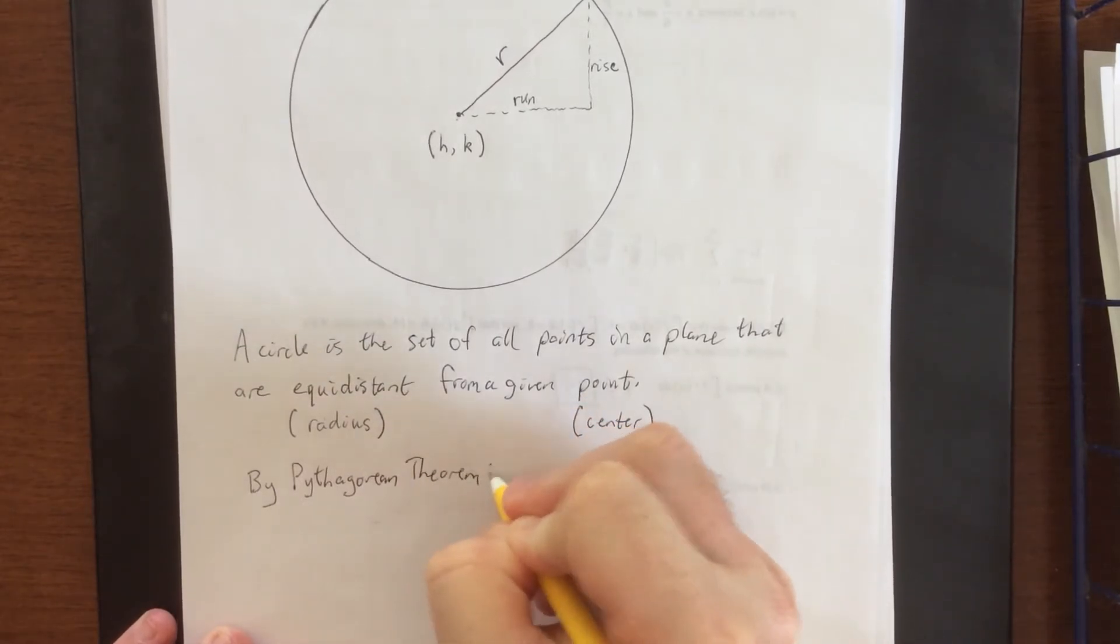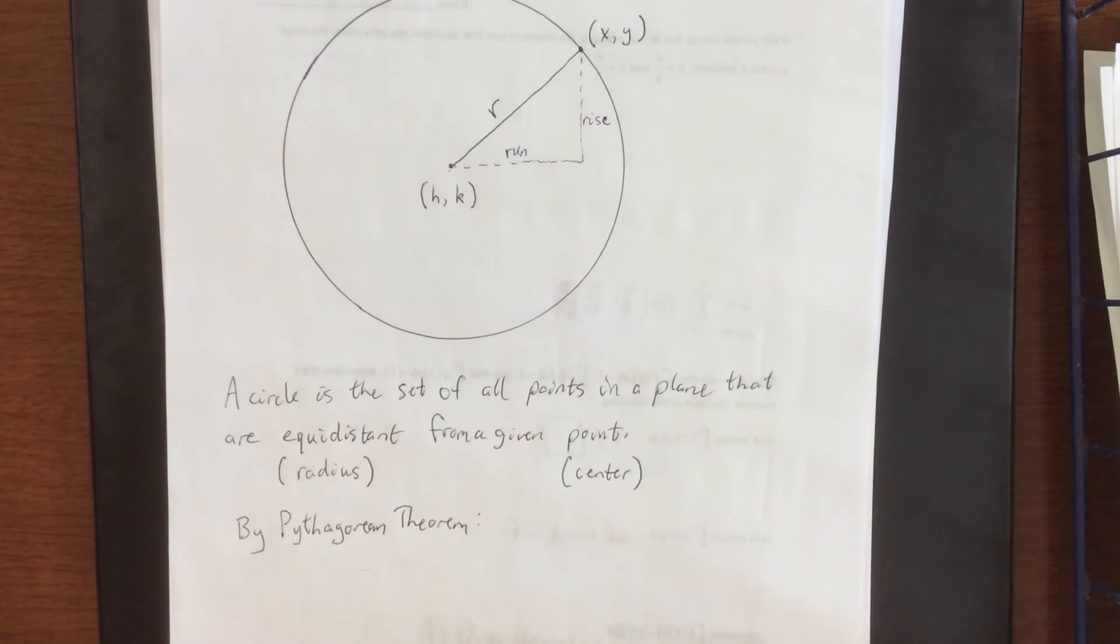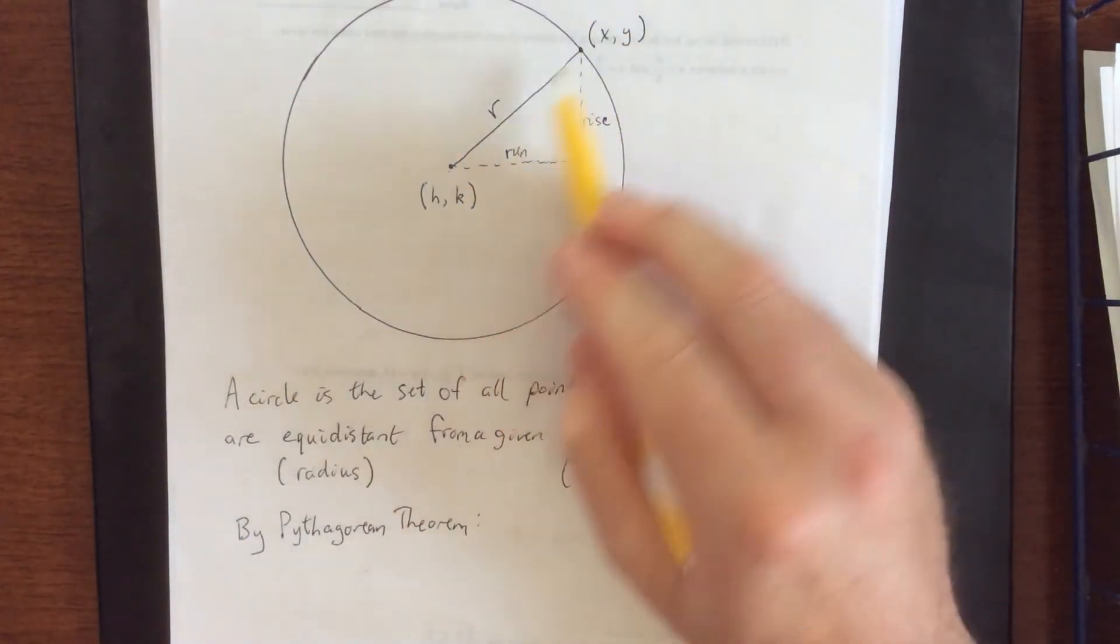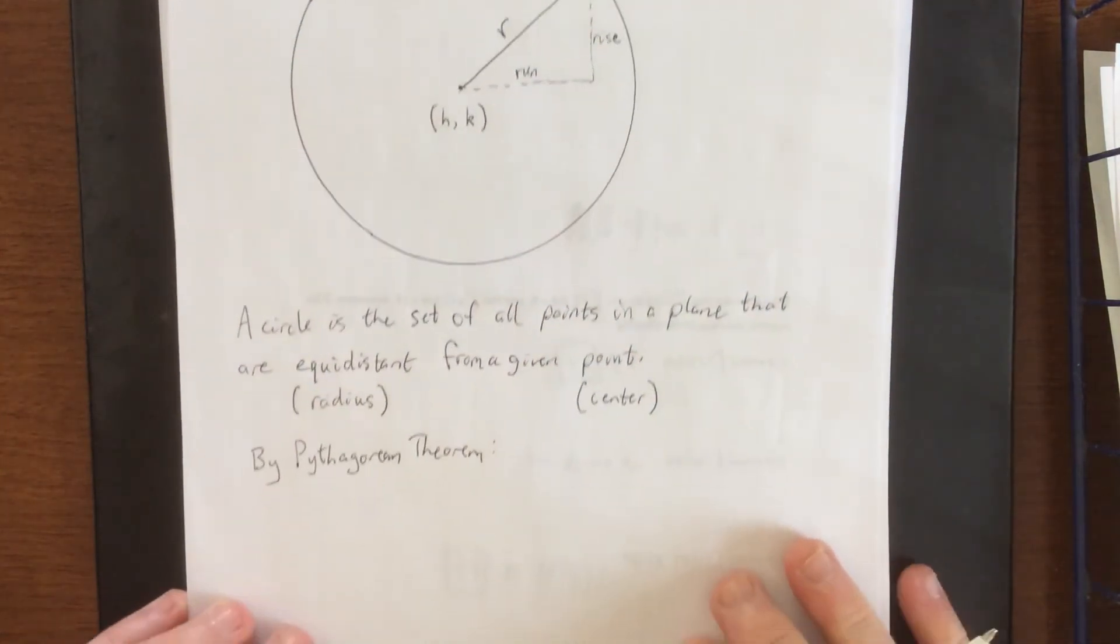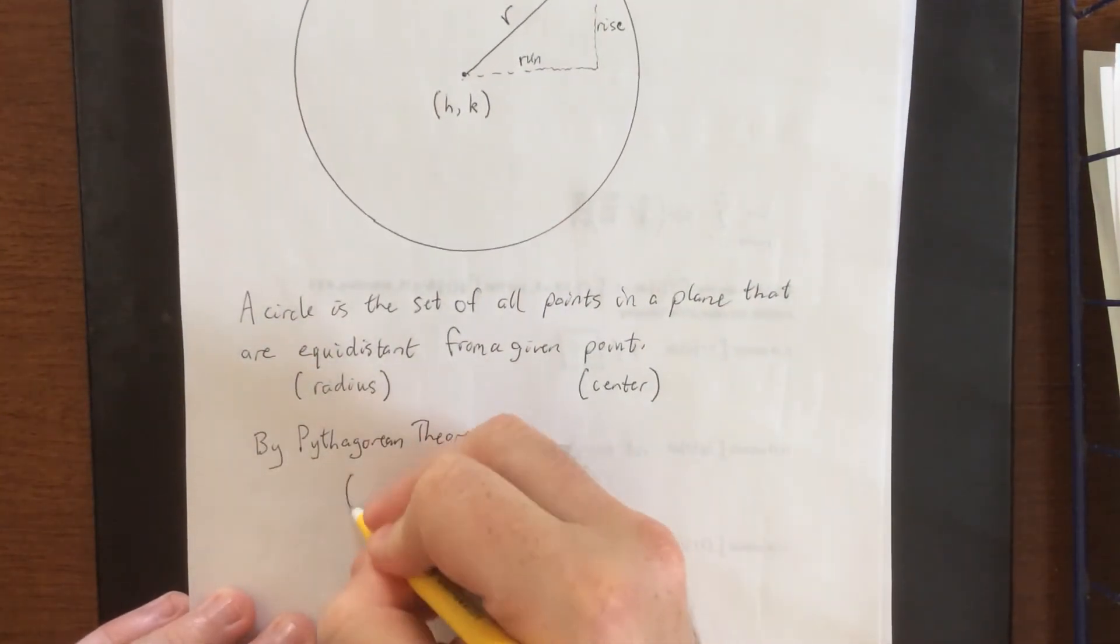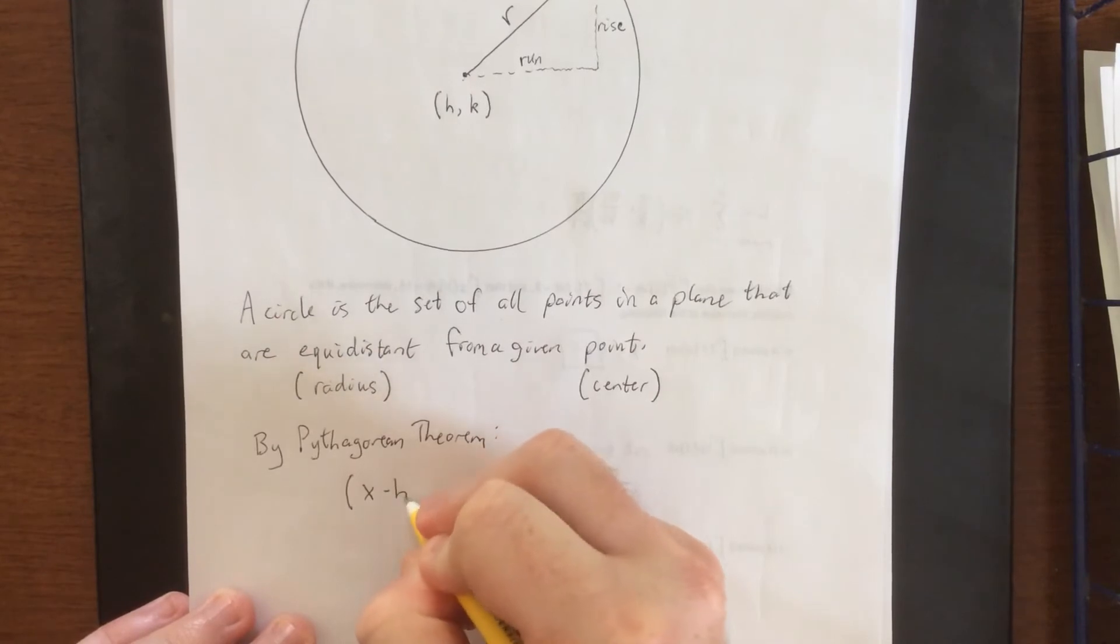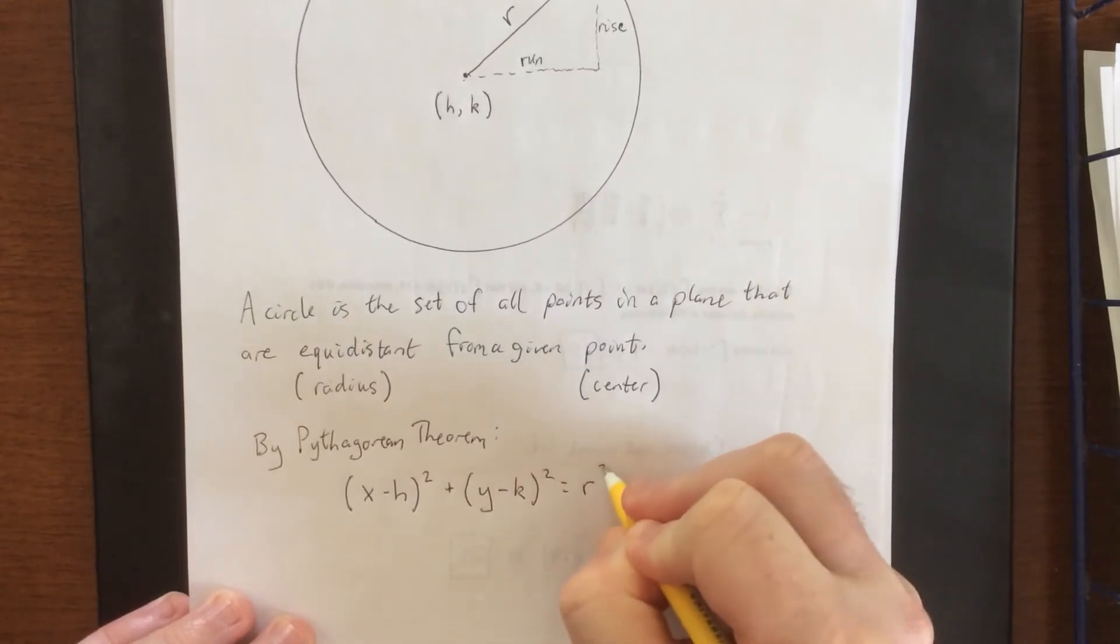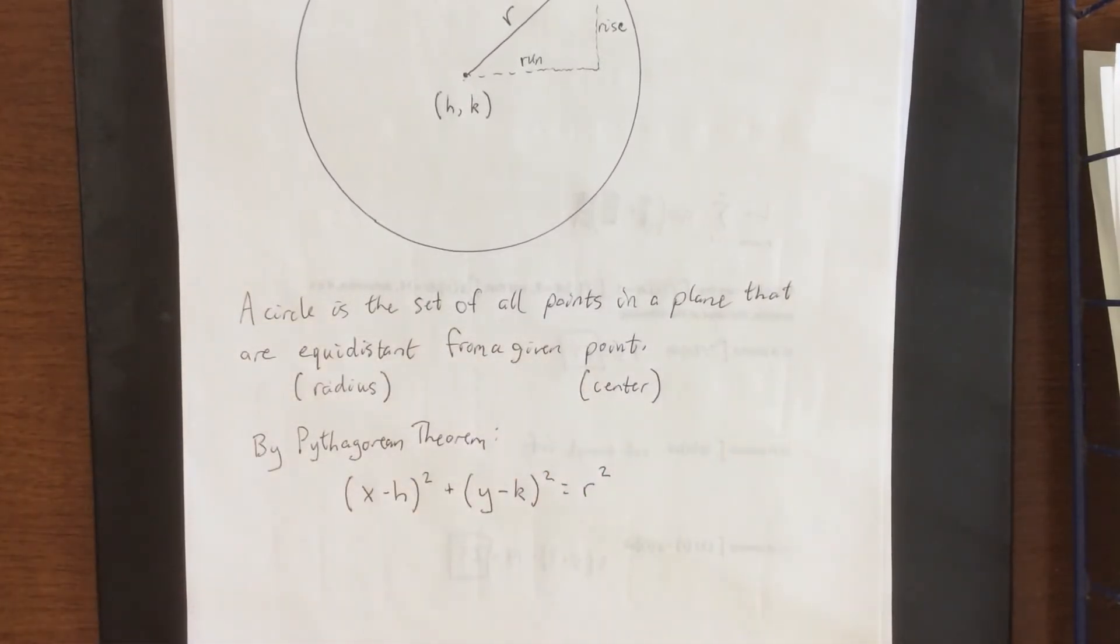According to the Pythagorean theorem, if I were to take this run squared plus this rise squared, I would get the hypotenuse squared. The run is more frequently known as a change in X, so we'll call that X minus H. The rise is a change in Y, so we'll call that Y minus K, and that'll be equal to the hypotenuse squared, which is R squared.